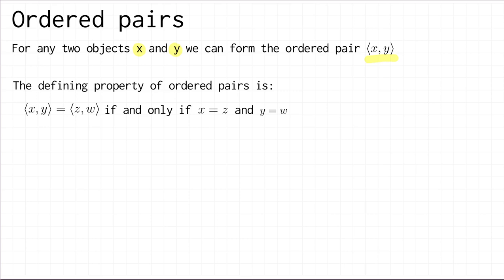And the defining property of ordered pairs is as follows. If you have two ordered pairs (x,y) and (z,w), then they are equal if and only if the first entries are equal and the second entries are equal.